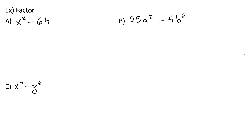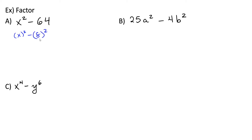Now let's look at a couple of examples. For example a, we can see that our perfect squares are x squared and 64, which is also a perfect square — that's 8 squared. So we have x squared minus 8 squared, and now we can factor this into x plus 8 times x minus 8.